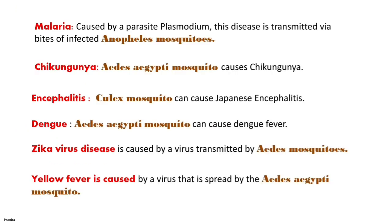Malaria is caused by a parasite named Plasmodium, which is transmitted when an infected Anopheles mosquito bites. Aedes aegypti causes chikungunya. Culex mosquito causes Japanese encephalitis. Aedes aegypti can also cause dengue fever. Aedes mosquito can cause Zika virus disease. Aedes aegypti also causes yellow fever. These are just a few examples.